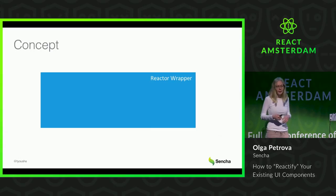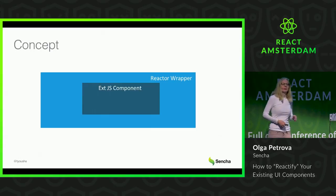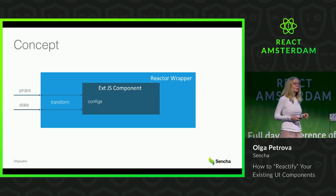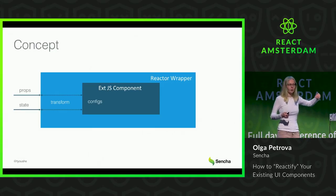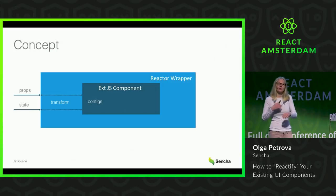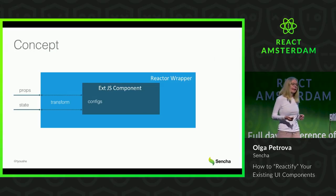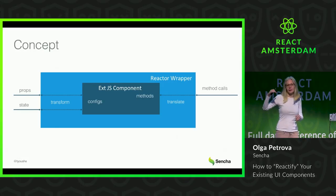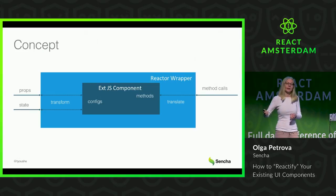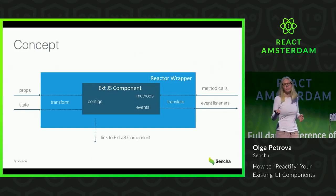The basic concept is just a simple wrapper that will create the exe.js component — or your component — under the hood. The constructor of this wrapper will take props and state from React, transform them, and create exe.js configs. Then it will translate React method calls into exe.js method calls, and it will also fire React events that correspond to exe.js events, and it provides a link to the underlying exe.js component.